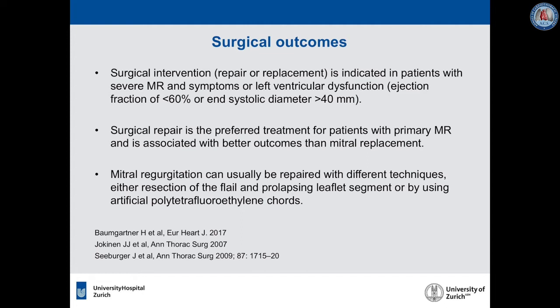Surgical intervention — repair or replacement — is indicated in patients with severe MR and symptoms or left ventricular dysfunction, ejection fraction less than 60%, or end-systolic diameter more than 40 millimeters. Surgical repair is the preferred treatment for primary MR and is associated with better outcomes than mitral replacement. Mitral regurgitation can usually be repaired with different techniques, either resection of the flail and prolapsing leaflet segment or by using artificial PTFE cords.